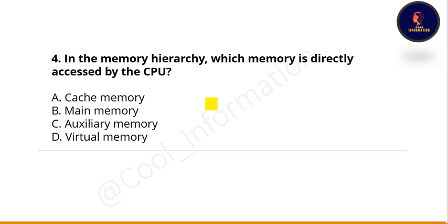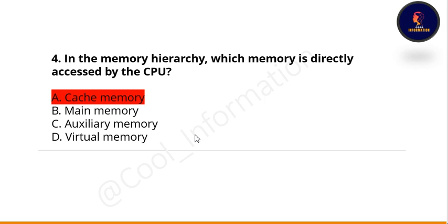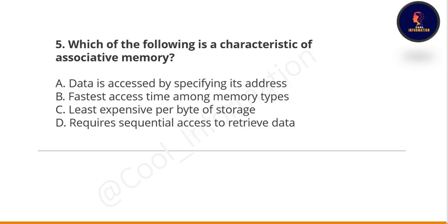Next question about which memory is closest to the CPU. Options are cache memory, main memory, auxiliary memory, and virtual memory. The correct option is A — cache memory.